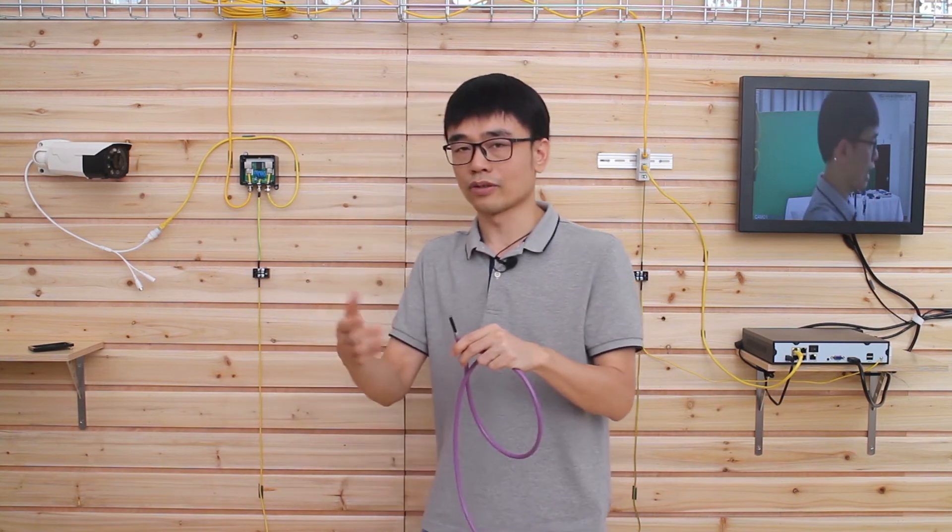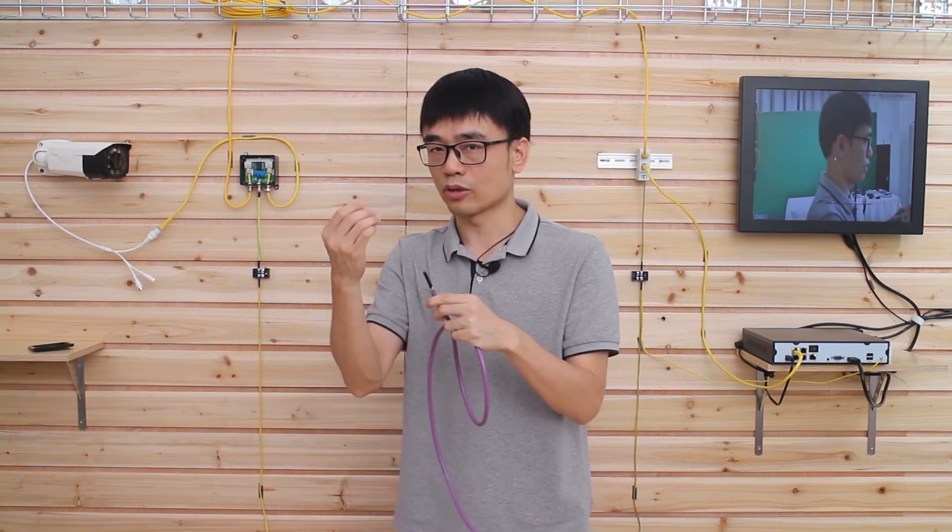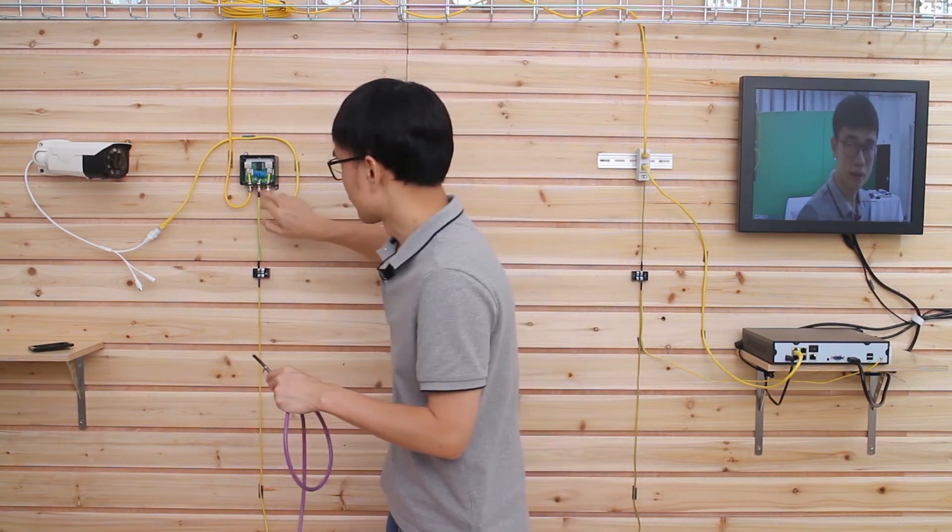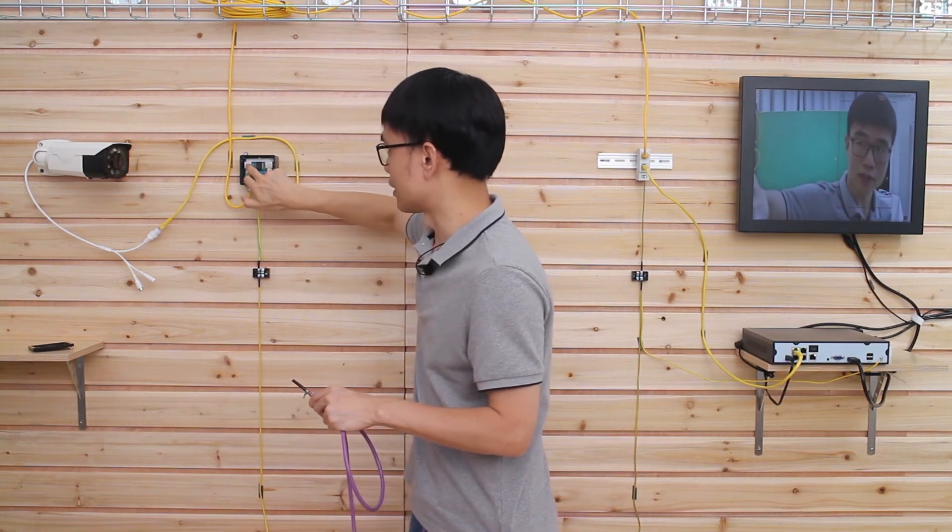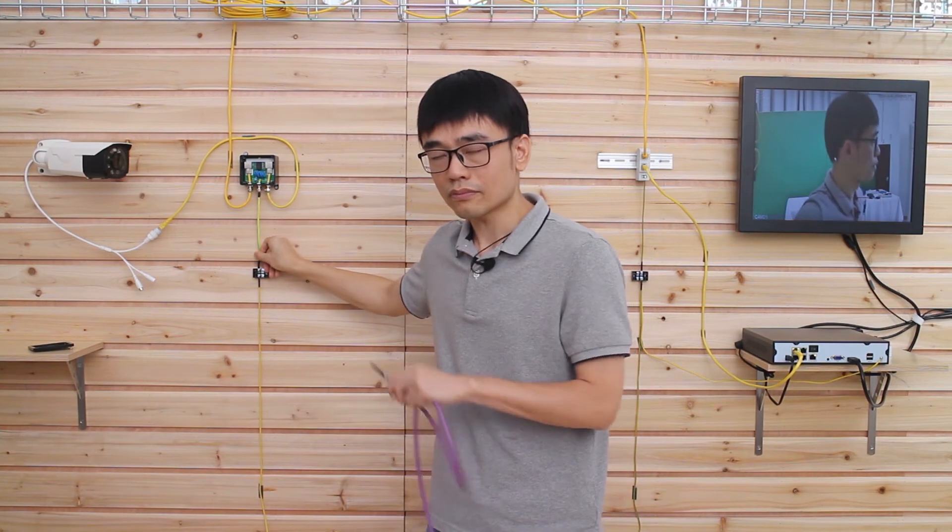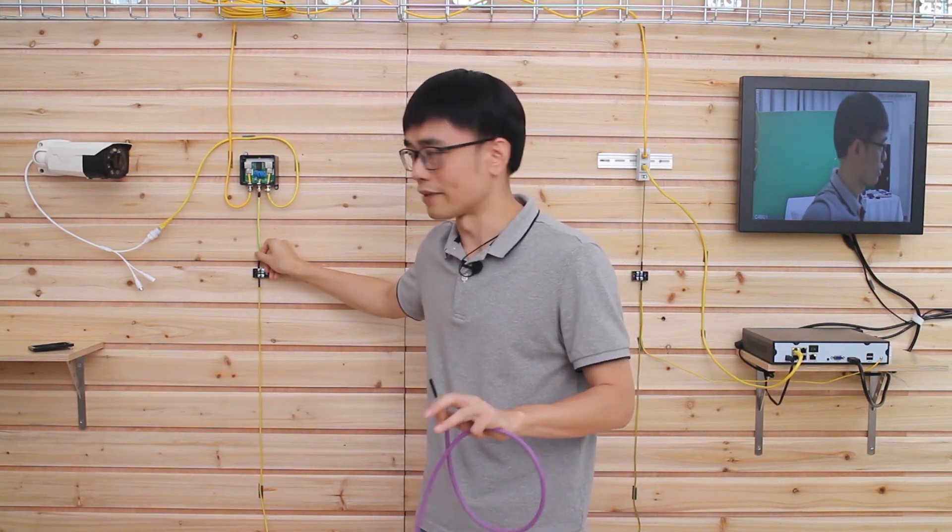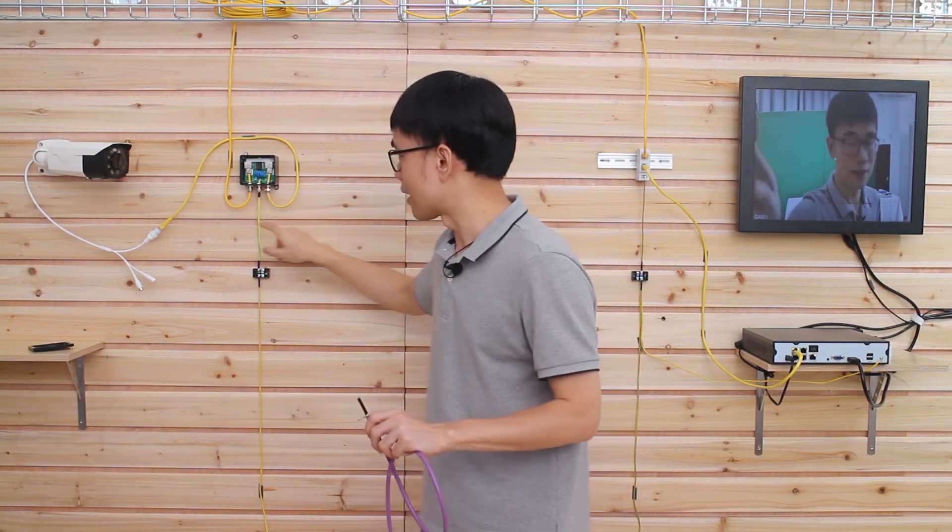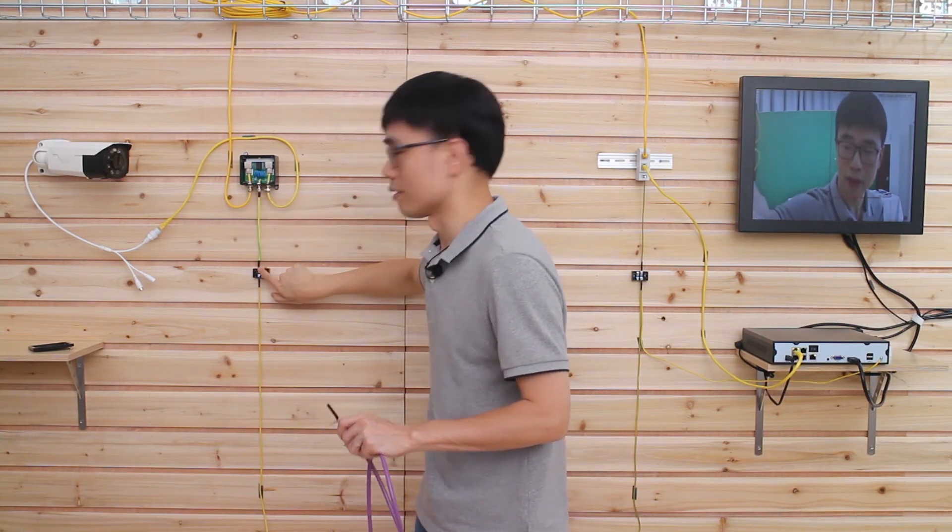You know, we have RJ45 connectors with the metal type, right? You may try to just use this metal to lead the surge to the grounding spot. It will never work. Why? Because in the standard design, we have isolated this part and here.